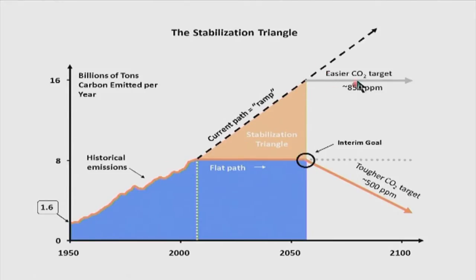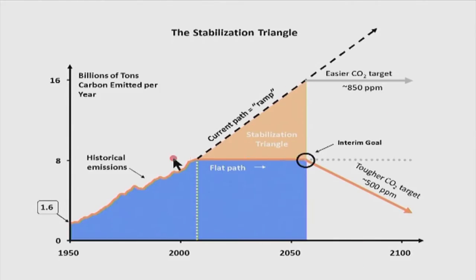Just to put it in perspective: if we replace all of our incandescent bulbs across the globe — which we are now replacing with CFLs or LED lights — it will only give one-quarter of a wedge. That means even by replacing all the bulbs globally, that won't even give me one wedge. So it is a really huge challenge. It is not that it can be done in a simplified way, but it is possible because these technologies are available at some scale.